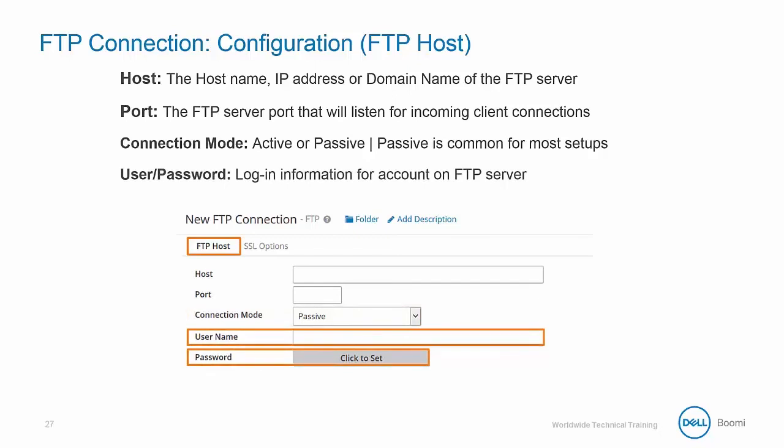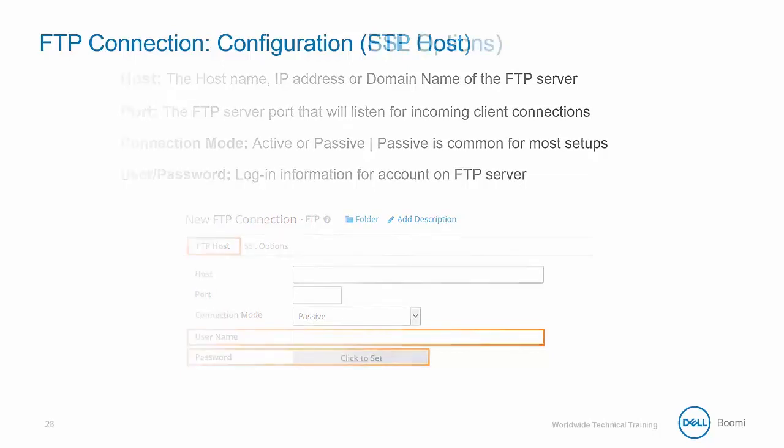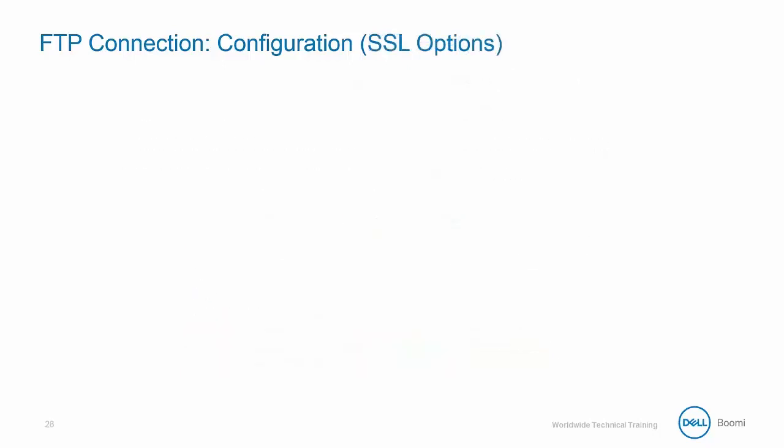Finally, we have the username and password, which represents login information for the account on the FTP server. Keep in mind that this connection is a component, so once it's created you can reference it in other FTP connector shapes rather than creating a new one. We'll also need to change some options within the SSL option sub-tab — once selected, the new options appear within the connection window.